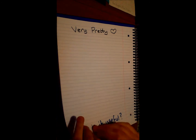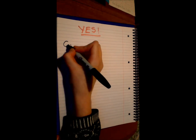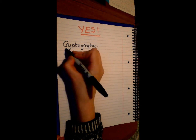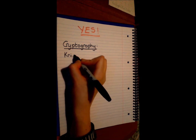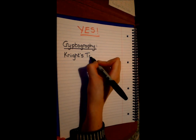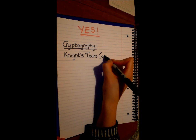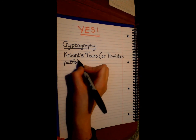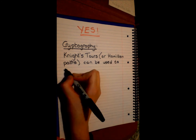But is this useful? Yes! The field of cryptography uses Knight's Tours, or Hamilton paths, to encrypt messages.